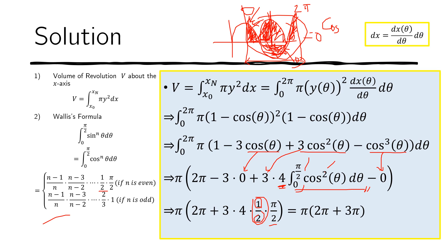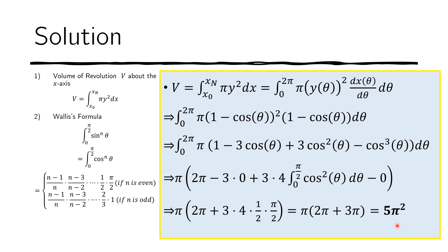And then we just simplify the whole thing. So we have π, we have 2π, and this is four, four, four here, cancel. So 2π plus 3π. And we just, again, simplify that. And that gives us 5π².